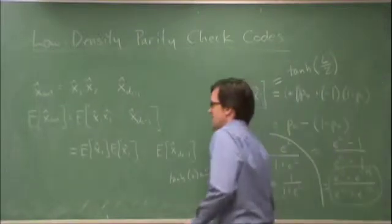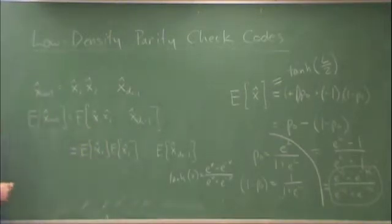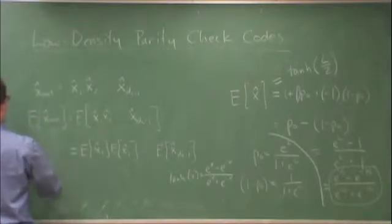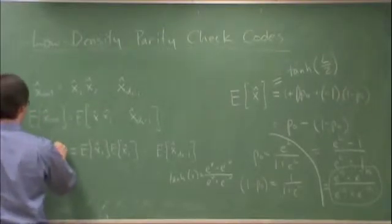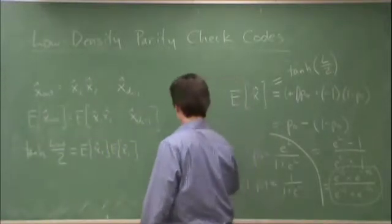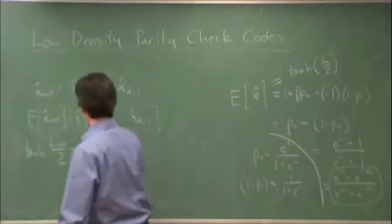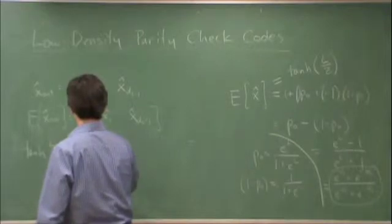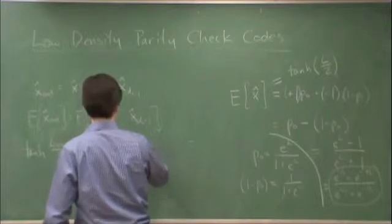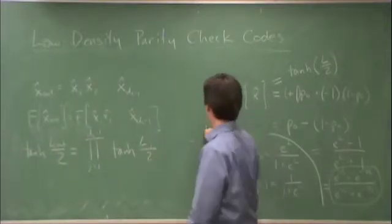Back here. This means all of these we have log-likelihood ratios associated with. So this means tanh of L out over 2 is equal to the product of j equals 1 to dc minus 1 of tanh of L j over 2. These are all the inbound messages, remember. Let me redraw this.